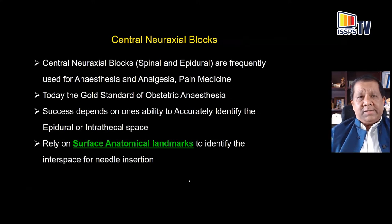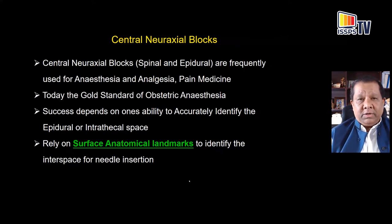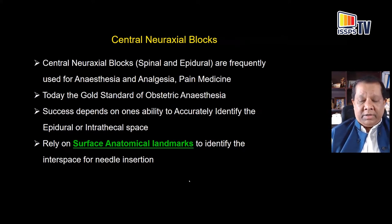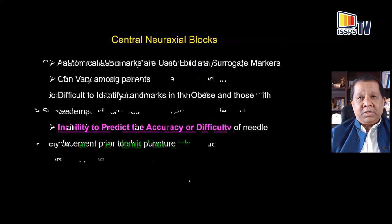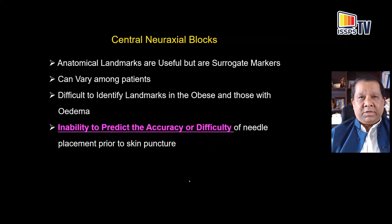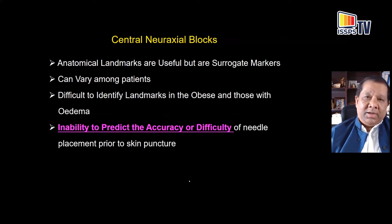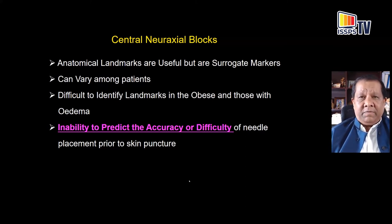Central neuraxial blocks today are the gold standard for obstetric anesthesia. Success depends on your ability to identify the epidural or intrathecal space. You rely on surface anatomical landmarks to identify these and then perform the neuraxial intervention. Anatomical landmarks are useful, but variation is very common and varies among patients. More importantly, it's difficult to identify these landmarks before needle insertion.